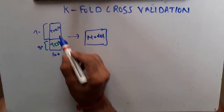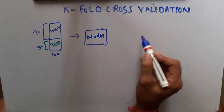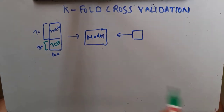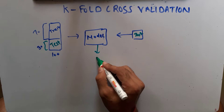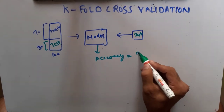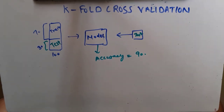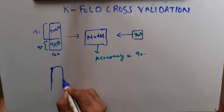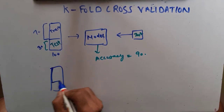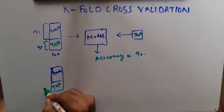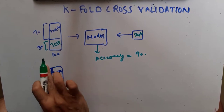We give the test data to check the accuracy of the model, and let's say we get an accuracy of 90%. Now assume there is another scenario where I have the same dataset, but this time my test data is 20% and my train data is 80%.